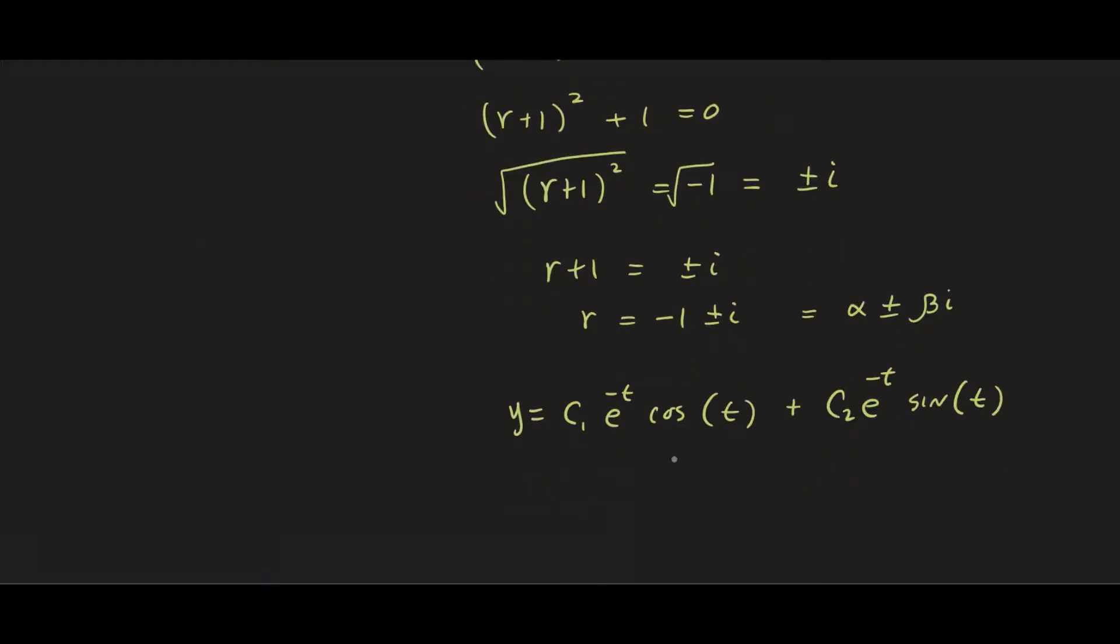Or if you want you can factor out the exponential part. So we have y equals e to the negative t times c1 cosine t plus c2 sine of t. So that's how we can write the solution to complex roots.